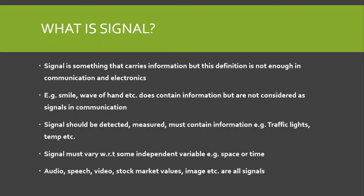In this video we will learn what is a signal, what is a system, and what is a power and energy signal. A signal in general terms is something that carries information, but this definition is not enough in communication and electronics. A smile or a wave of the hand does contain some information, but these are not considered signals in communication. For a quantity to be considered a signal, it must be detectable, measurable, and must contain information.